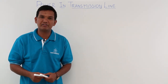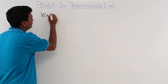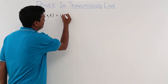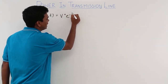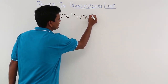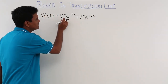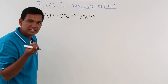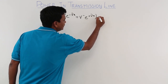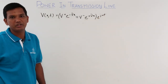The voltage equation we derived in the previous video comes out to be v(x,t), the voltage in space and time, equal to V+ e^(-γx) + V- e^(+γx). This is the peak or RMS value. If we need the instantaneous value, we multiply the whole thing by e^(jωt).